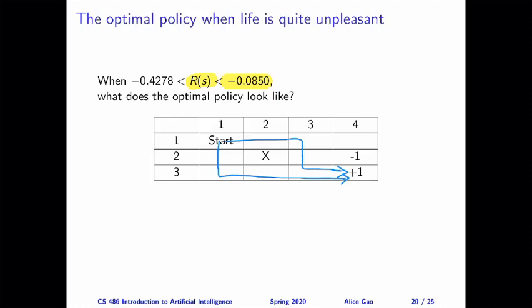So because of this, the agent is going to decide to start by going down. And once it's along the bottom path, it's going to try to follow that. So down, down, right, right, and right. Now, what if an agent tries to go down from S11 and actually ended up going right?